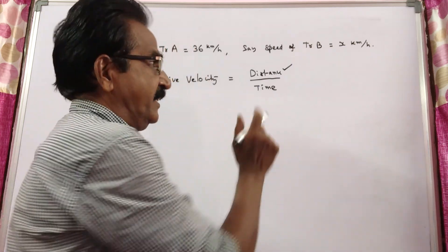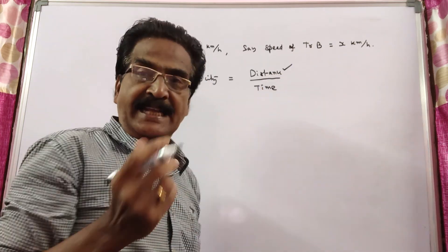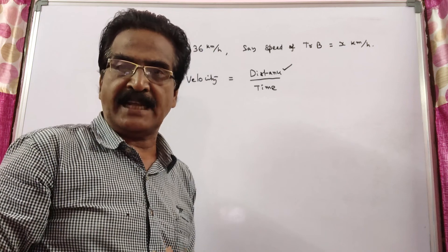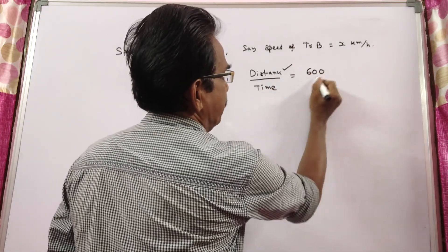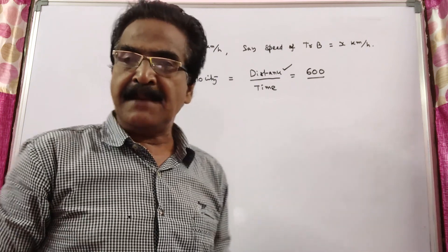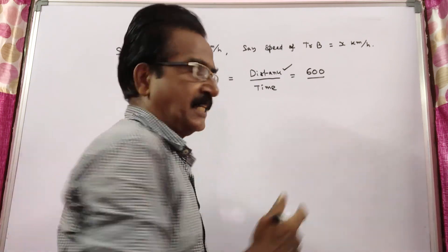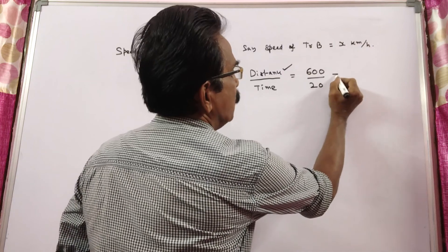So distance is given—that is the sum of the lengths of the two trains, 600 meters. And the time in which they cross each other is also given, 20 seconds.